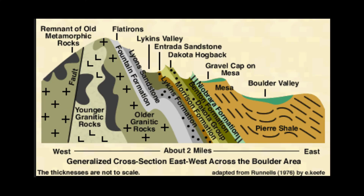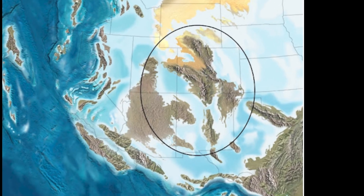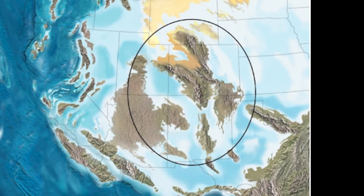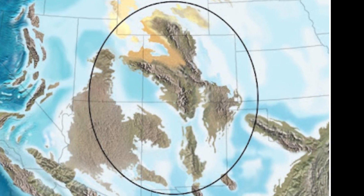Based on the age of the rocks this deposit lays above and the ones that it lays atop, it can be determined that the Fountain Formation was deposited during the Pennsylvanian period, around 290 to 340 million years ago. This makes sense if we look at the geologic history at that time — the ancestral Rockies were slowly eroding and were up against an ocean which spanned over Denver and to the east.